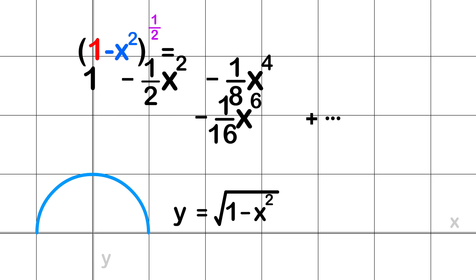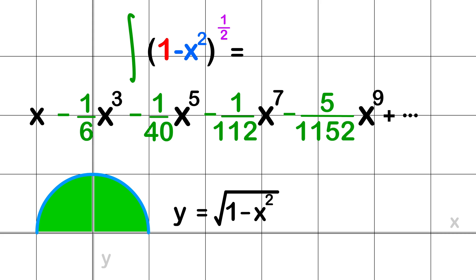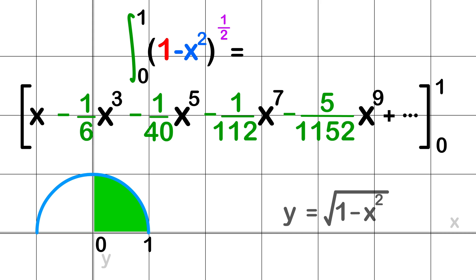Now when we take the integral of the equation, it represents the area under the curve. To make this simple, let's just concentrate on the area between 0 and 1. So the area is just 1 fourth of the circle. Since the radius is 1, the area of this section is pi over 4.